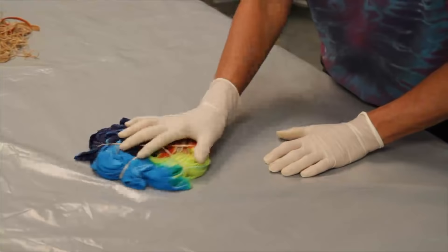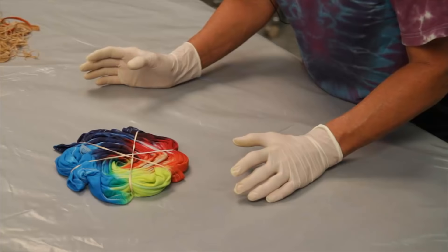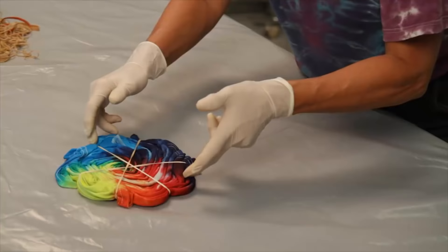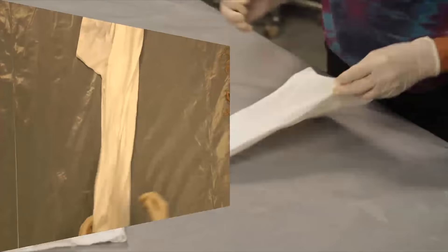So when we dye this spiral, when we dye the white shirt, the dye goes on in wedges like pizza slices.